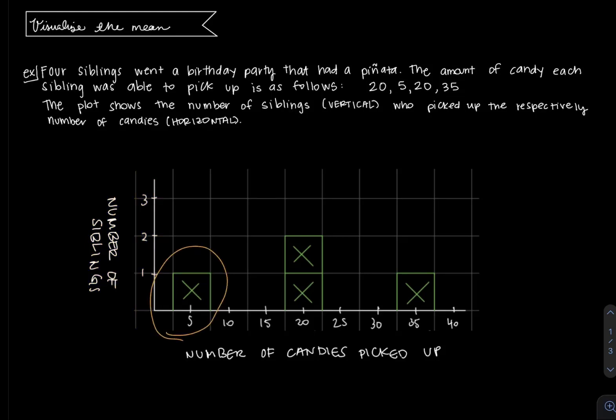So for example, right here where it says five and there's a green box with an x in it, it means that there was one sibling who picked up five pieces of candy.